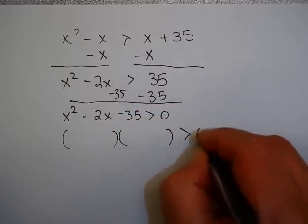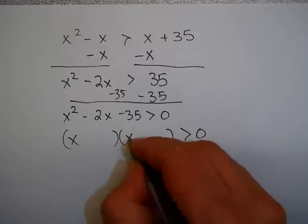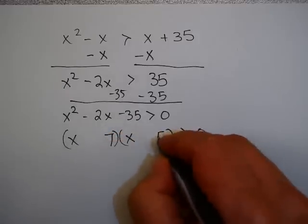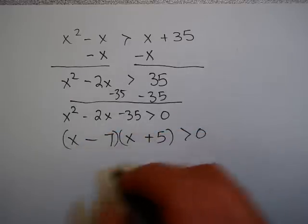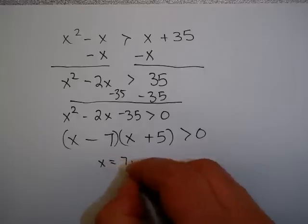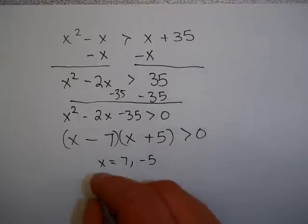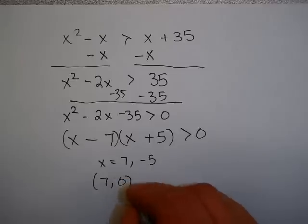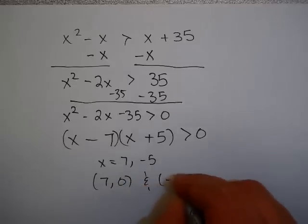Factor. We use 7 and 5. So x equals 7 or negative 5. These lead us to the x-intercepts (7, 0) and (-5, 0).